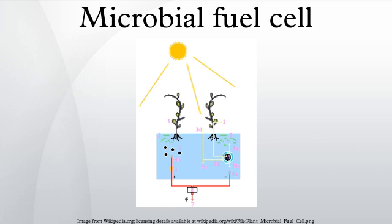In 1931, however, Barnett Cohen drew more attention to the area when he created a number of microbial half-fuel cells that, when connected in series, were capable of producing over 35 volts.